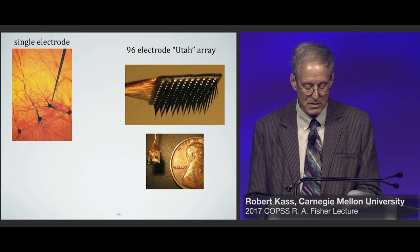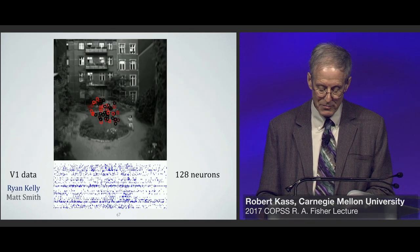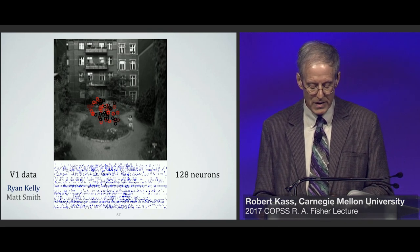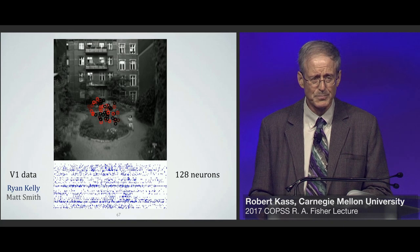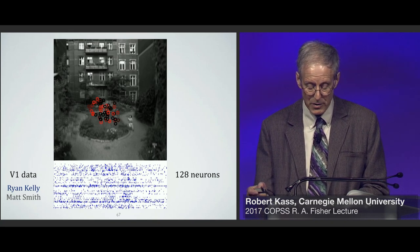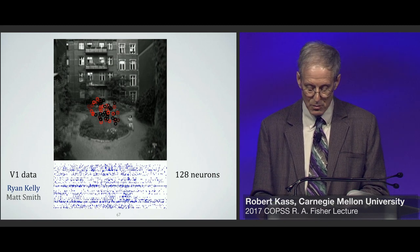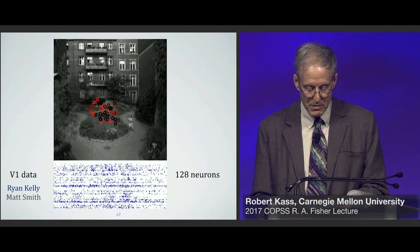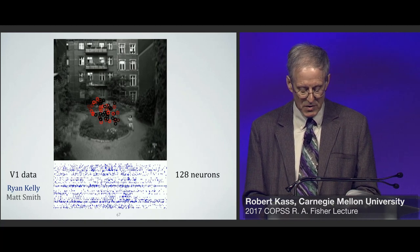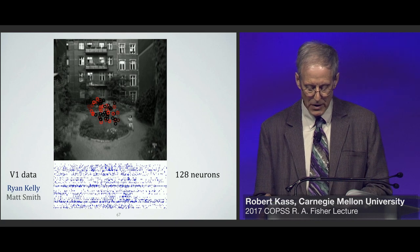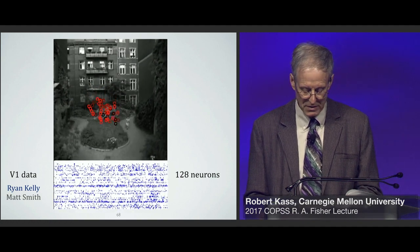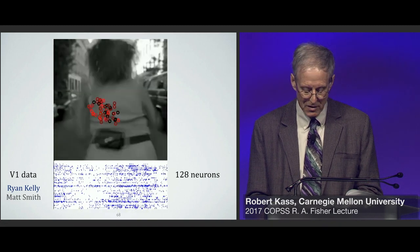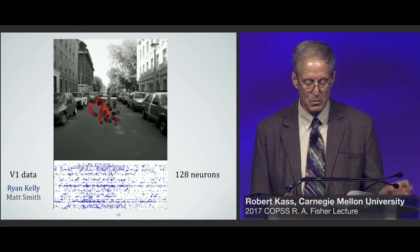The Utah array has 96 electrodes in a 10 by 10 grid with the corners removed, and it can record anywhere from about 25 to more than 100 neurons simultaneously. I'm going to play a short video displaying Utah array data collected by former Carnegie Mellon student Ryan Kelly, now at Google, and Matt Smith, now a professor at the University of Pittsburgh. The electrode array was implanted in primary visual cortex — area V1 — of a monkey watching a movie, with circles showing receptive fields of individual neurons that turn red when firing rapidly, and 128 spike trains displayed simultaneously. This illustrates a typical statistical challenge of figuring out what these spike trains are responding to in the visual image.